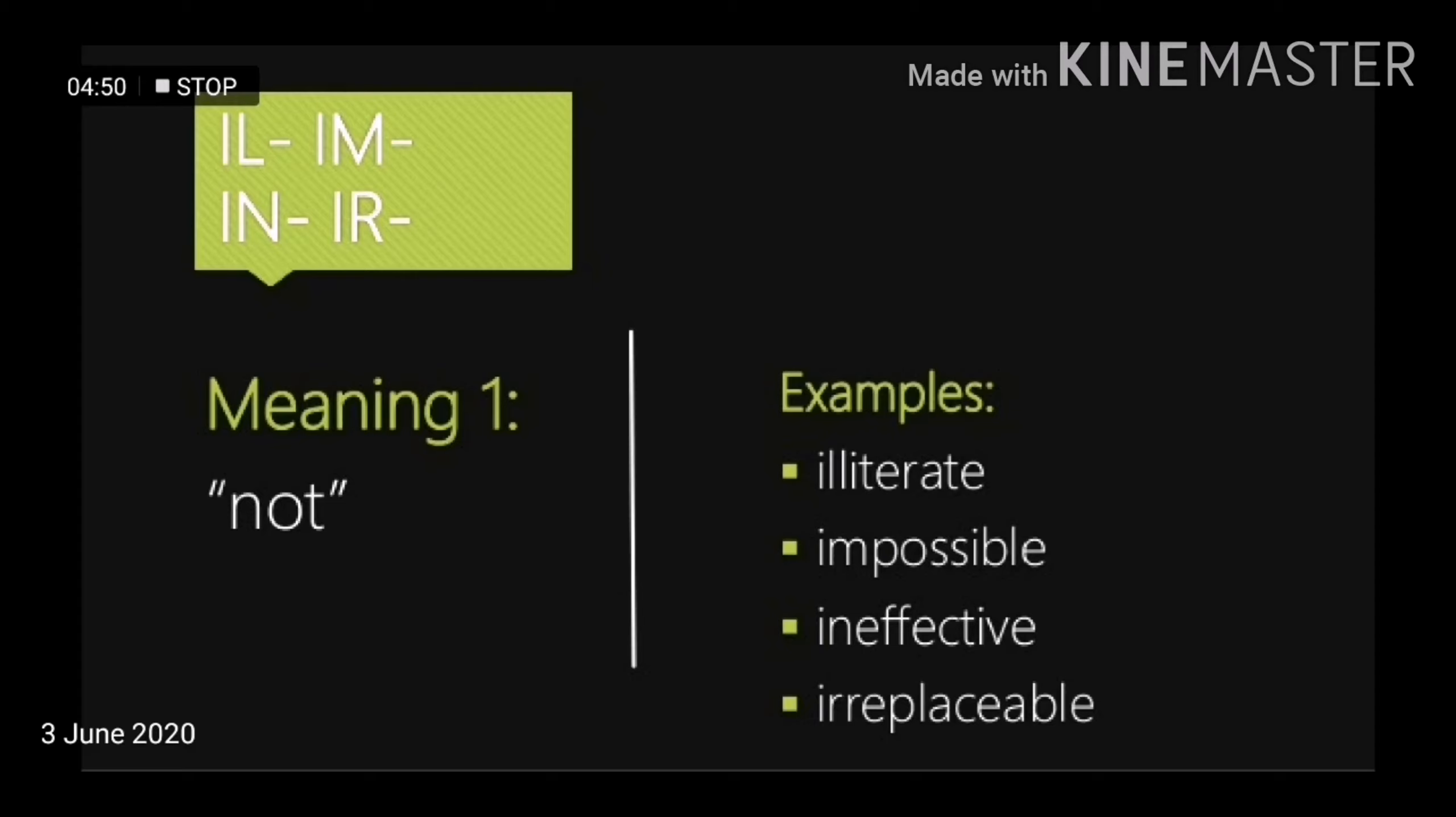For example, literate ho gaya jo padha likha ho. Illiterate ho gaya un. Par toh agar hum il lagate hain toh iska opposite ban jate hain, iska antonym ban jate hain. Possible is a root word. You add im to it as a prefix and it becomes impossible, the antonym of the root word. Other examples are ineffective, irreplaceable.